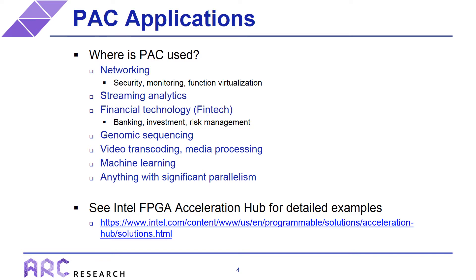The PAC is used for video transcoding and general media processing, and very frequently for machine learning — which applies to probably all of these domains. Really, it can be used anywhere there is a significant amount of parallelism, because that's where FPGAs get their advantage: when you can create a highly parallel circuit. If you want to look at specific real-world examples where the PAC has been used, you can look at the Intel FPGA Acceleration Hub, where you'll find case studies and white papers on actual applications that have used this card.